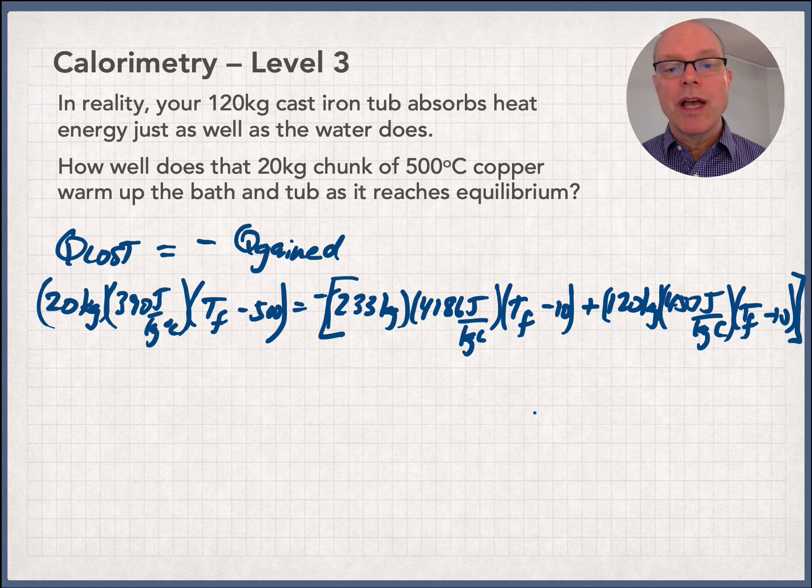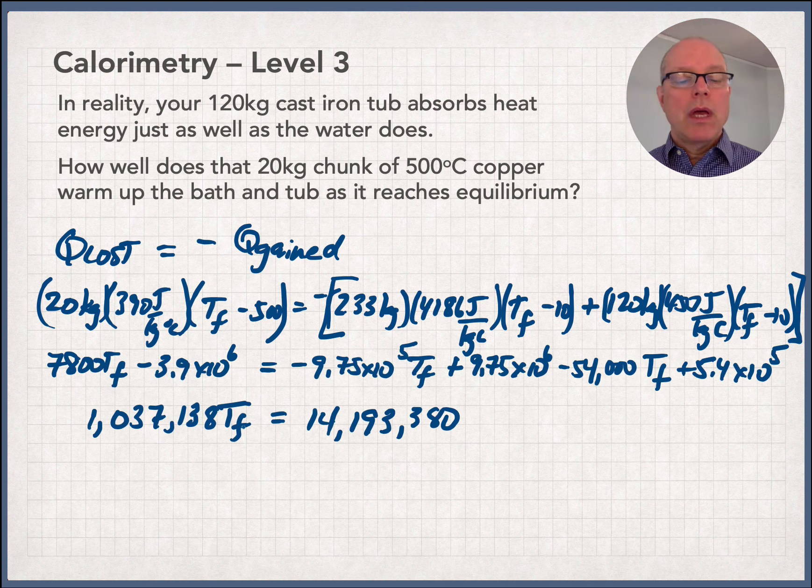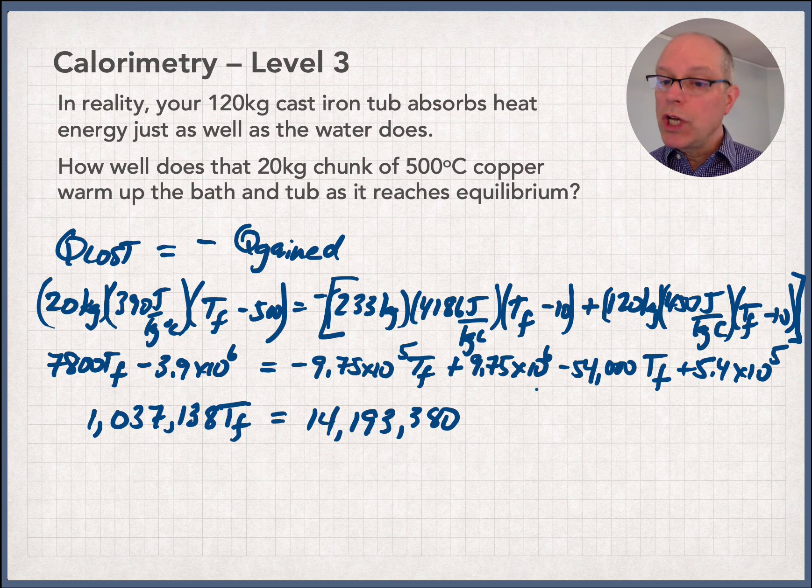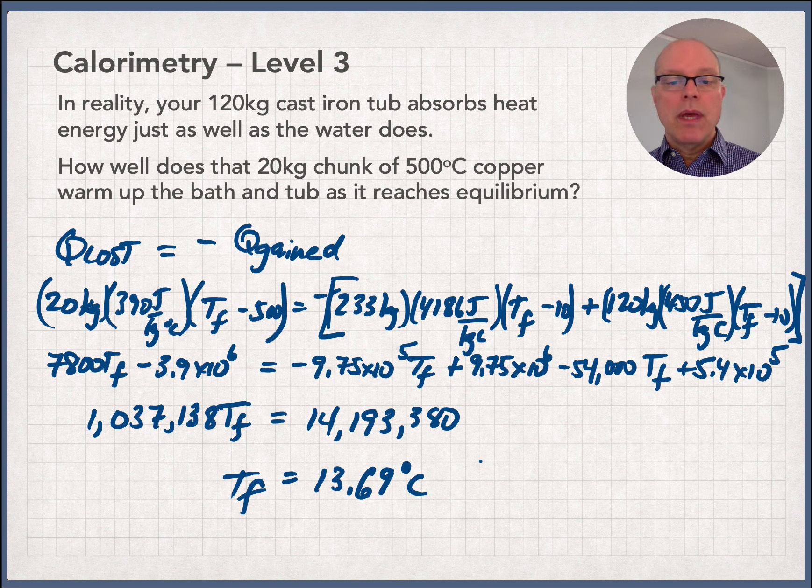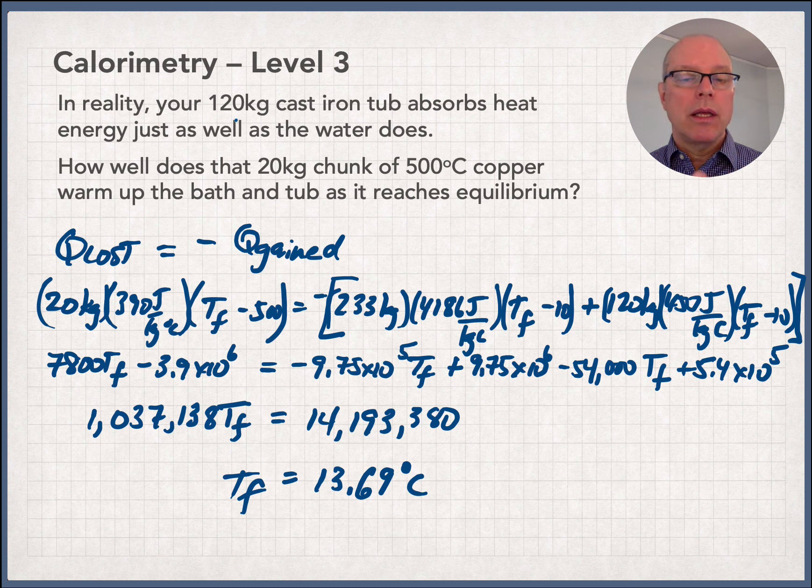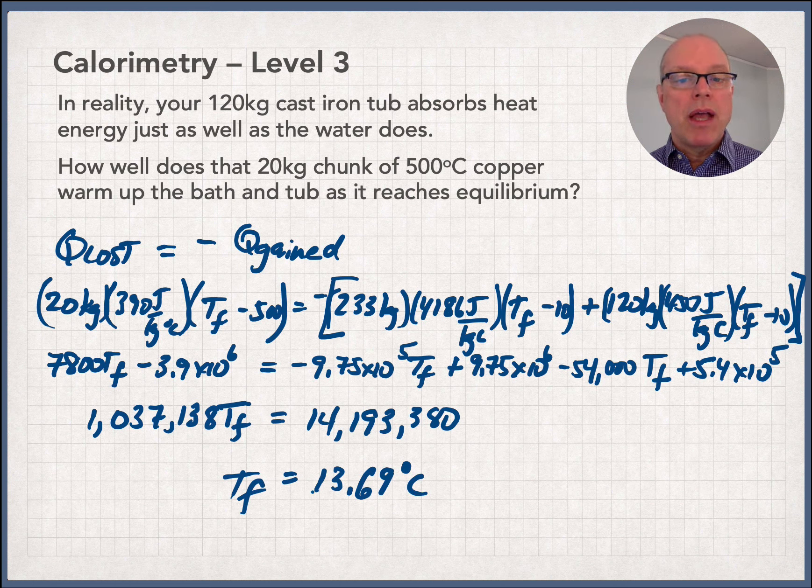So we're just going to go ahead and distribute this, write it out just as we did last time, and check it out at the finish line. So as you can see, we've collected our like terms. Check me if you like to, but we're just going to solve this thing for TF, and we find out that TF equals 13.69 degrees C. And it's amazing. This makes almost no difference. So the amount of water in the tub and the specific heat of water means that water soaks up almost all the heat energy, including the container here, makes very little difference.